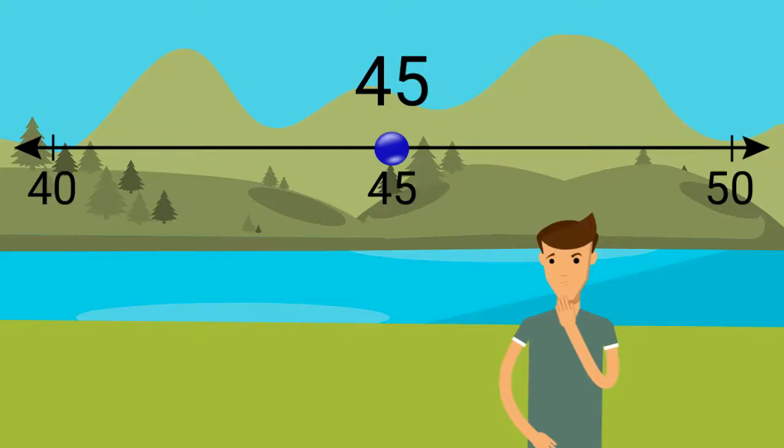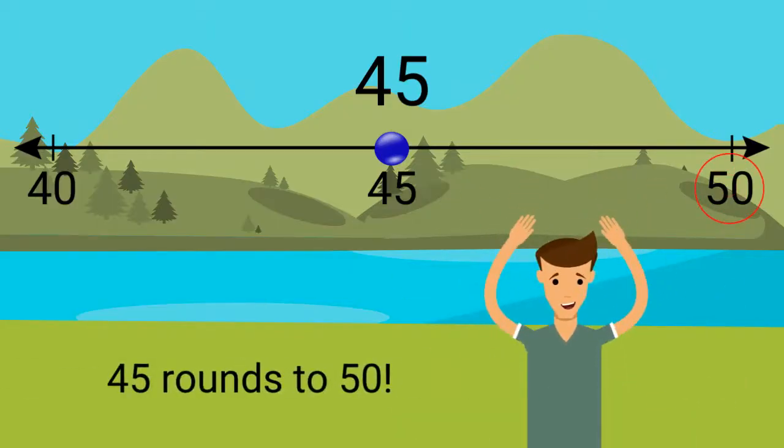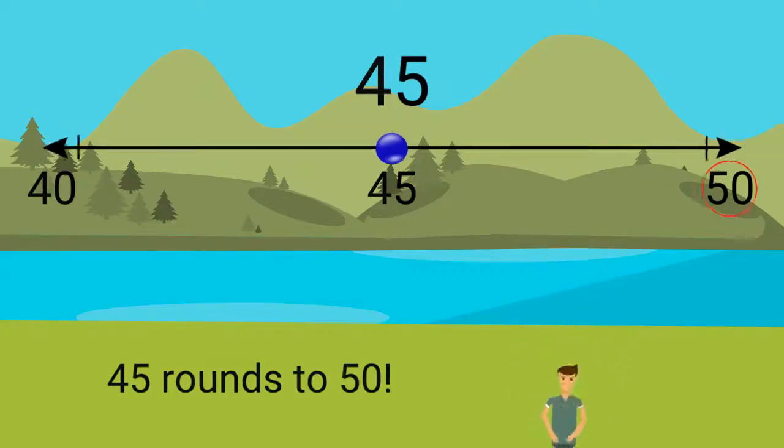This next one is tricky. What is 45 rounded to the nearest 10? 45 actually rounds to 50. If the number is halfway on the number line, always round up.